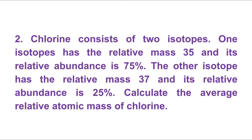Exercise 4.2, number 2. Chlorine consists of two isotopes. One isotope has the related mass 35 and its relative abundance is 75%. The other isotope has the related mass 37 and its relative abundance is 25%. Calculate the average related atomic mass of chlorine.